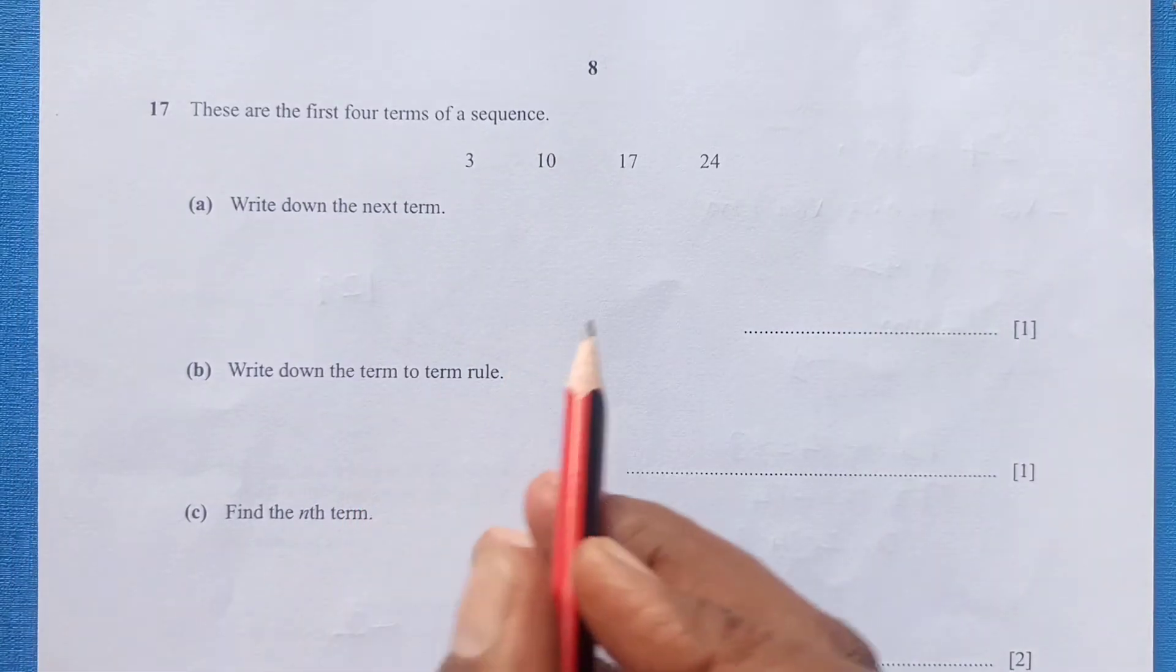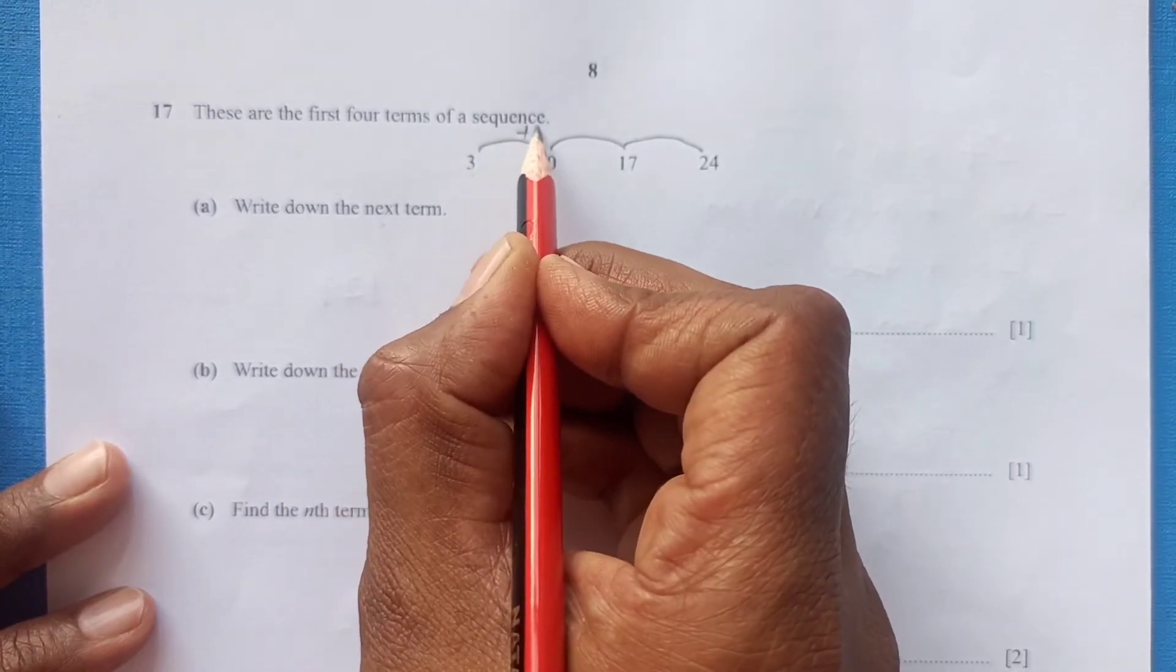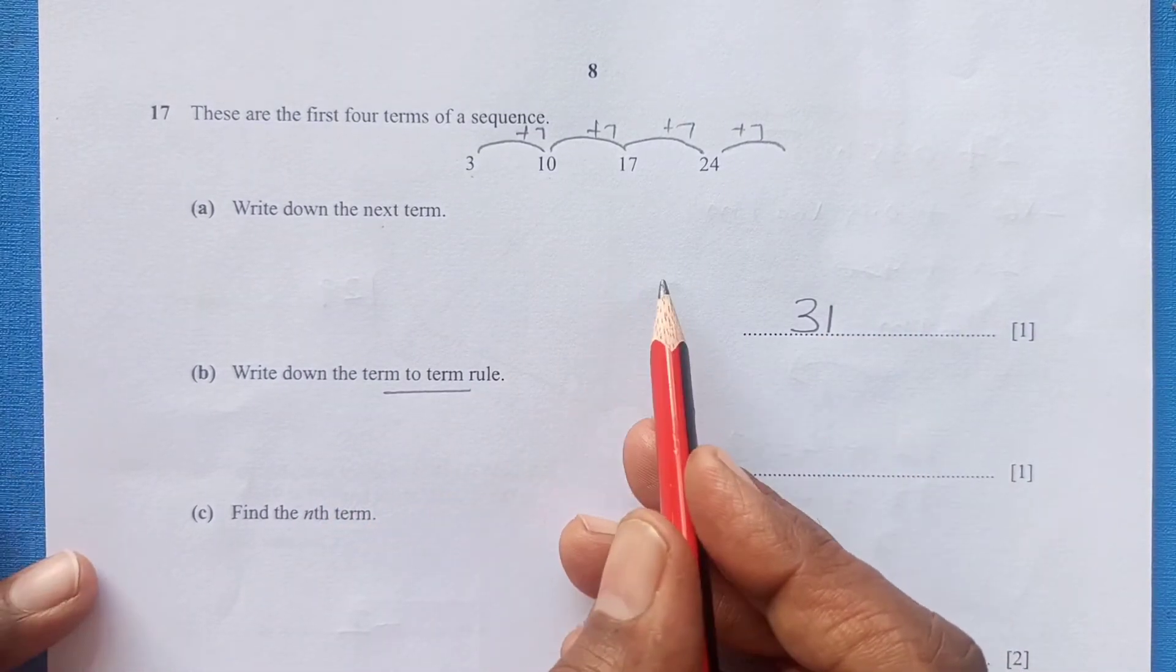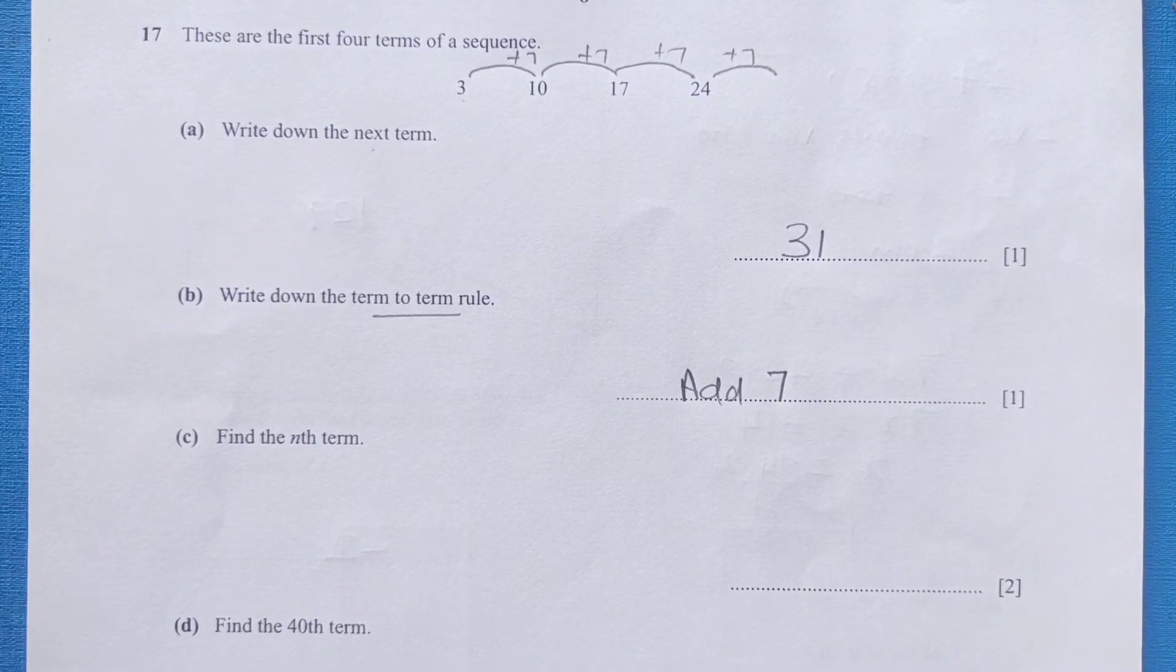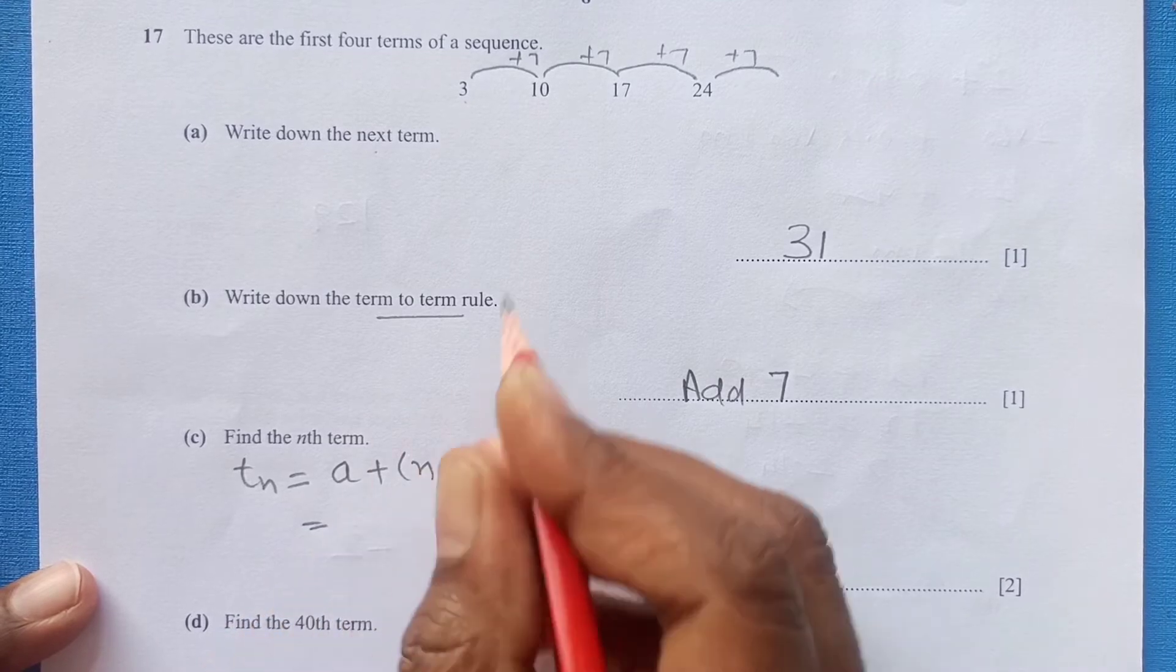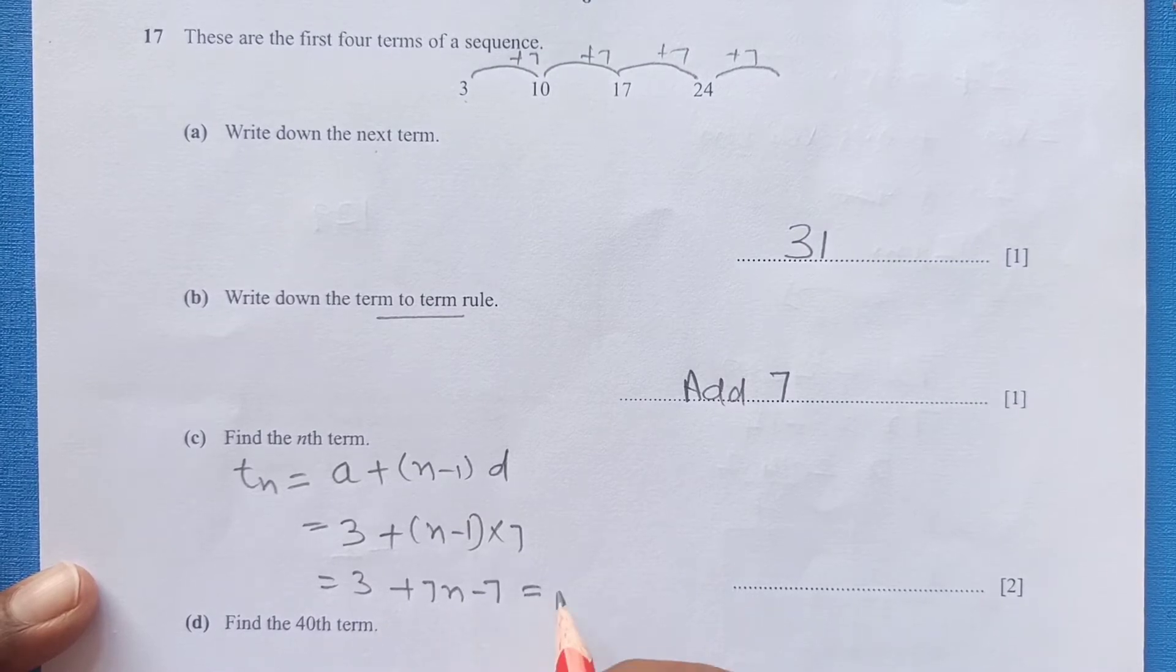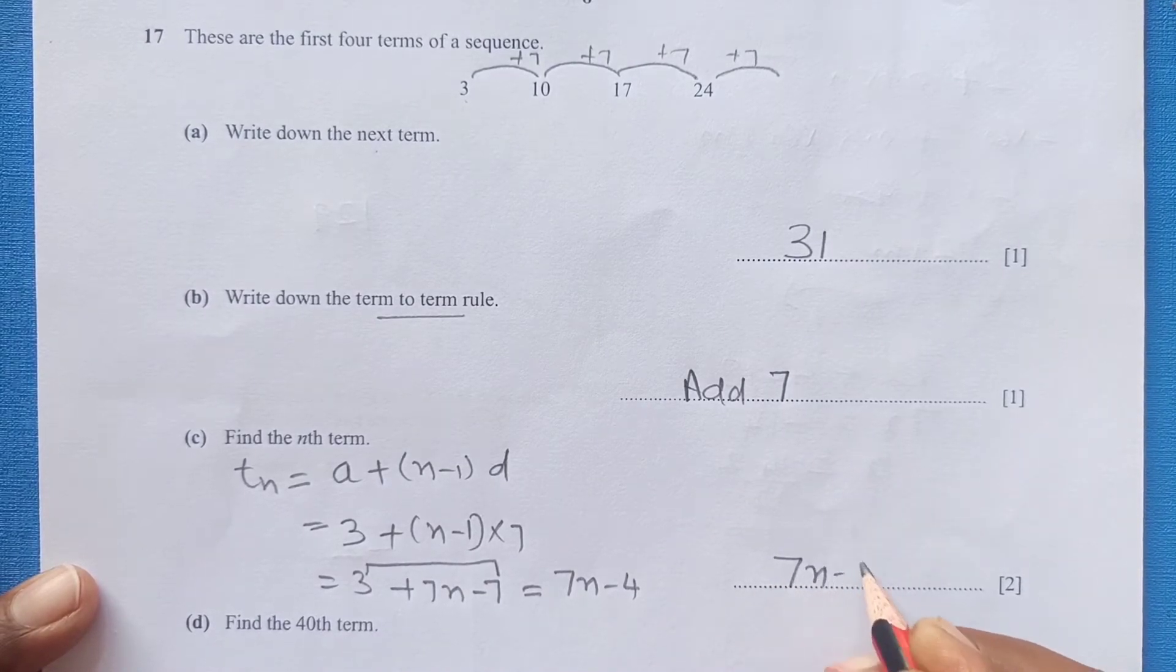Number 17. So if we look at this pattern here, we are getting next term by adding 7. So here when you add 7, 24 plus 7 is 31. So final answer is going to be 31. Write down the term to term rule. As you have seen how we are getting next term we are getting by adding 7. So it will be add 7. Find the nth term. For the nth term we will use the formula tn equals a plus n minus 1 times d. First term here it is 3, and n as it is, and common difference it is 7. So this is 3 plus 7n minus 7. So this will be 7n minus 4.